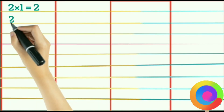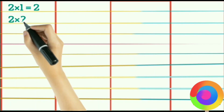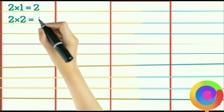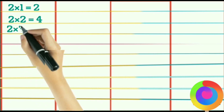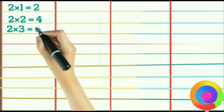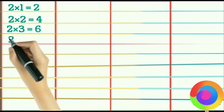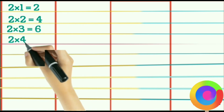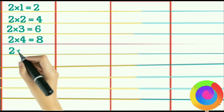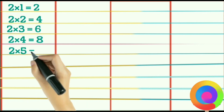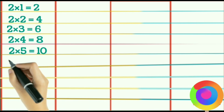2×1 is 2, 2×2 is 4, 2×3 is 6, 2×4 is 8, 2×5 is 10.